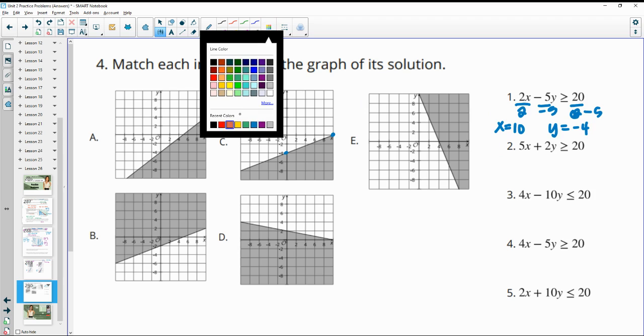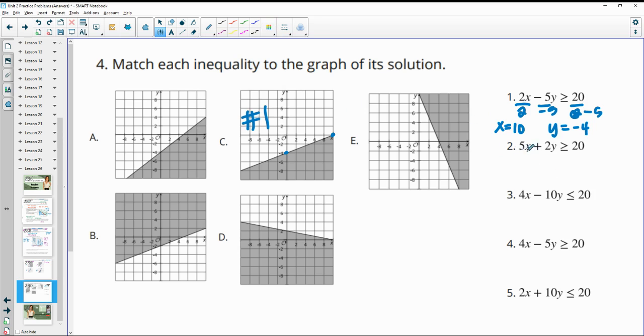Then number 2, we can do the same thing. So 5x equals 20. So if we divide by 5 to get our x intercept, we get x equals 4. And if we do the 2y equals 20, so put in a 0 for the x, we would get y equals 10. So let's look for x equals 4 and y equals 10. And let's check if there's another one and there's not. So number 2 goes with E.